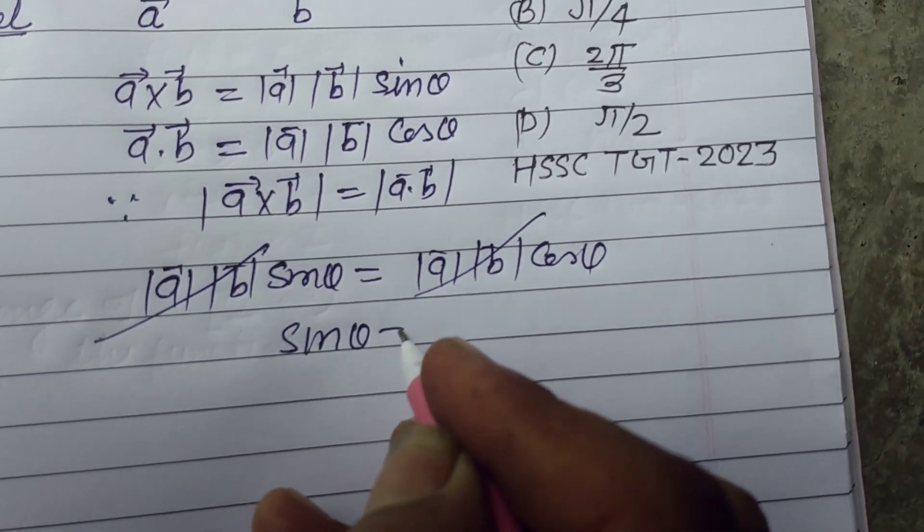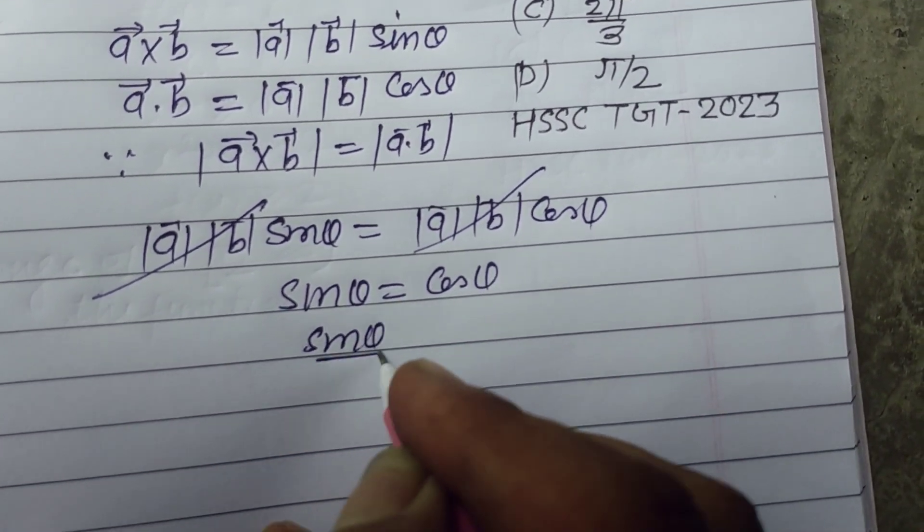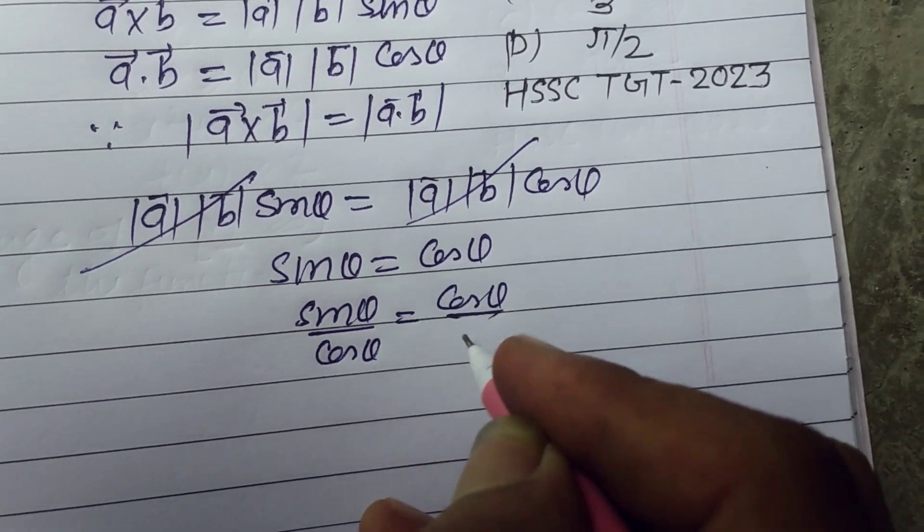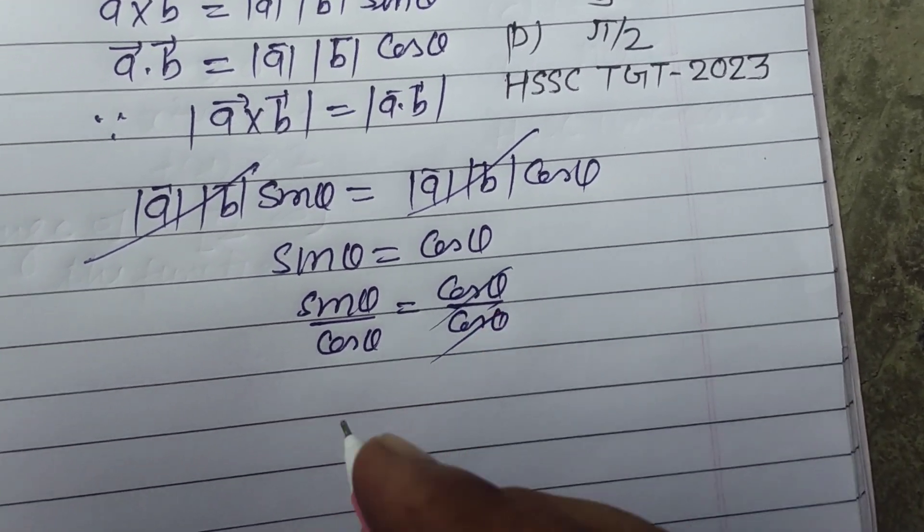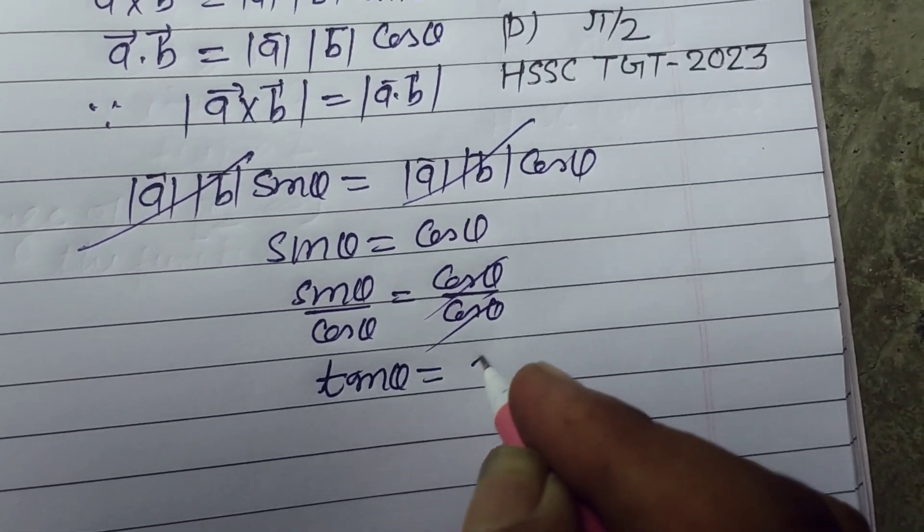We got sin theta equals cos theta. Or sin theta over cos theta equals cos theta over cos theta. So sin theta over cos theta, this is tan theta. Tan theta equals 1.